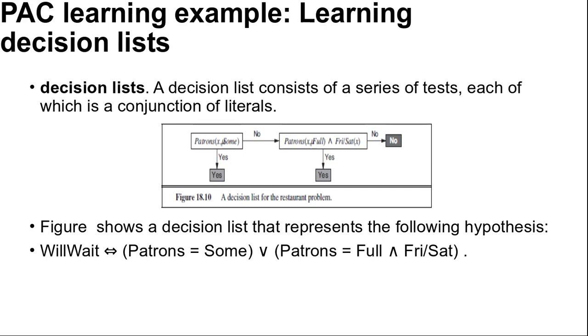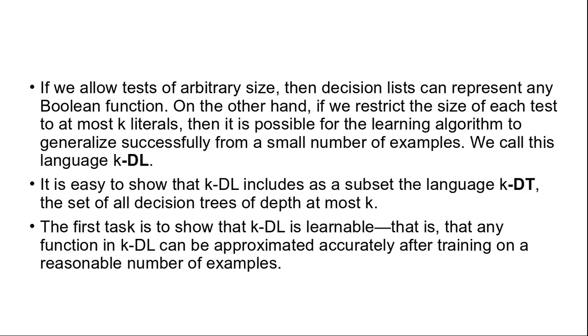If we allow tests of arbitrary size, then decision lists can represent any Boolean function. On the other hand, if we restrict the size of each test to at most K literals, then it is possible for the learning algorithm to generalize successfully from a small number of examples. We call this language k-DL.